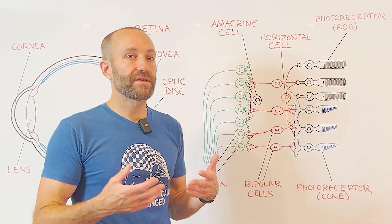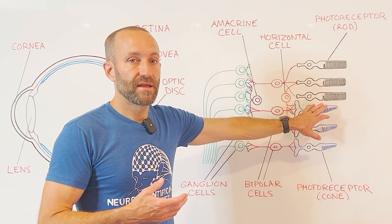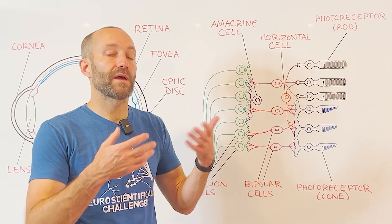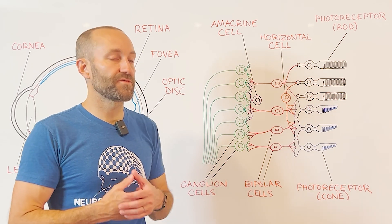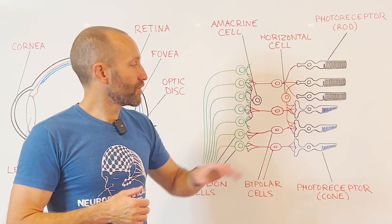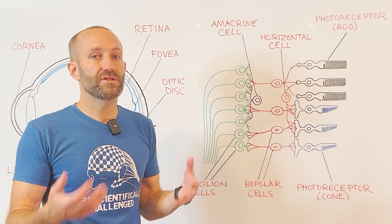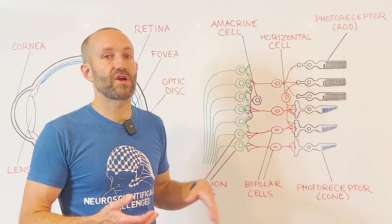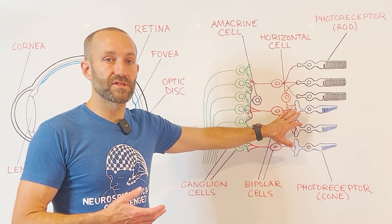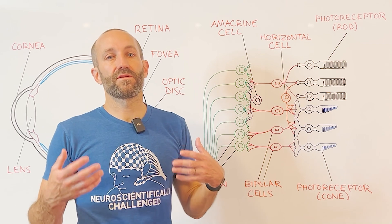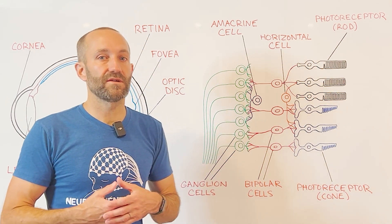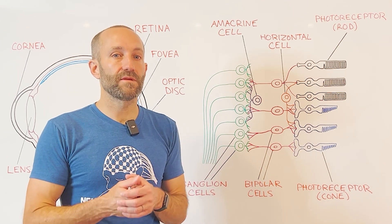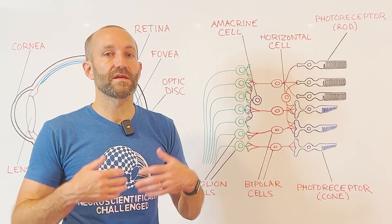Surprisingly, the layer of the retina at the very back of the eye is the layer that contains photoreceptors — the cells responsible for converting light energy into electrochemical signals, a process known as phototransduction. Their location is counterintuitive since light has to travel through several layers of cells to reach them, but it's thought to be strategic in that they're next to a layer called the pigment epithelium, whose cells help to maintain photoreceptor cells and keep them functioning properly.